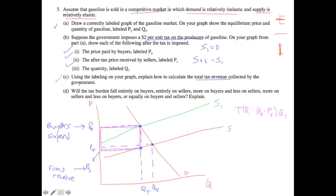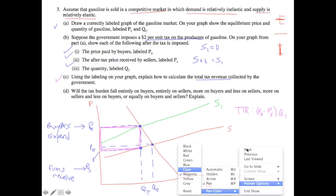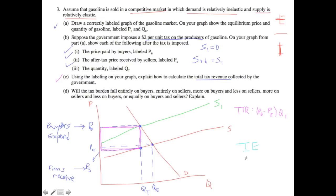So that's pretty much it for the total tax revenue. Now let's think about part D. Will the tax burden fall entirely on buyers, entirely on sellers, more on buyers and less on sellers, or more on sellers and less on buyers, or equally on buyers and sellers? So I'm going to show you a really quick trick here in terms of figuring out where the tax burden usually falls. The quick trick is essentially to knowing that the side that is more inelastic will bear more of the burden. So inelastic firms will often bear the majority of the burden. So here, if you go back to the original question, demand is relatively inelastic. So the answer to part D is going to be that buyers are going to be bearing more of the burden. And then sellers will be less.